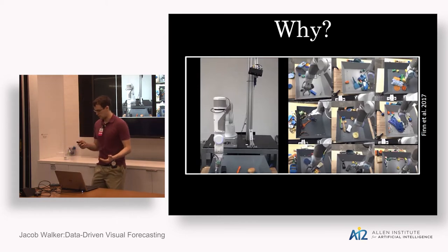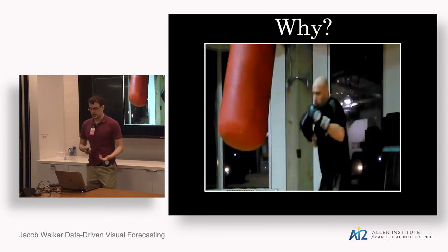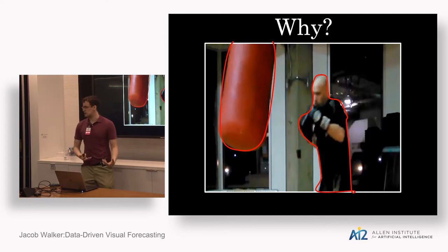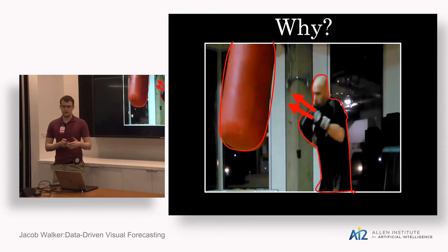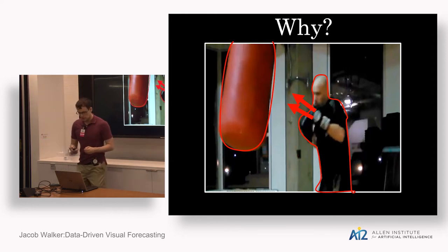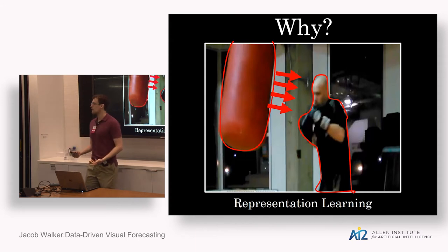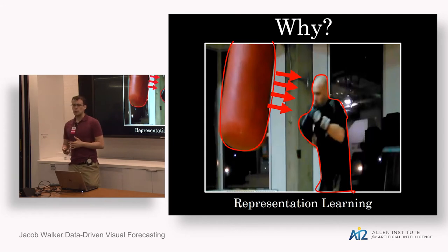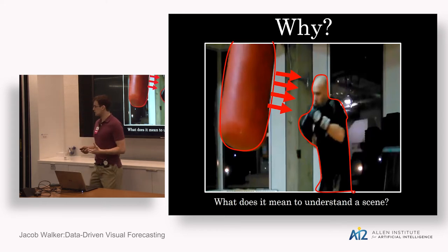Forecasting builds on top of other basic ideas in visual perception. In order to forecast what's going on in a scene, we need to identify the active elements — an implicit active object detection — and understand how things are going to move over time based on context. We could argue that forecasting is applicable to representation learning, especially in its data-driven form: if computer systems can forecast future frames in a video, they can implicitly learn representations useful for other vision tasks. Ultimately, visual forecasting is a fundamental part of what it means to understand a scene.